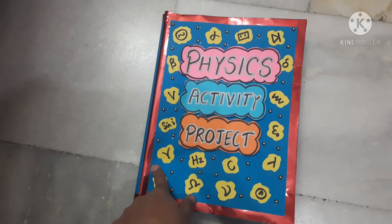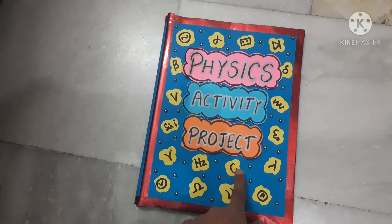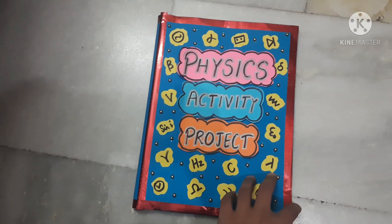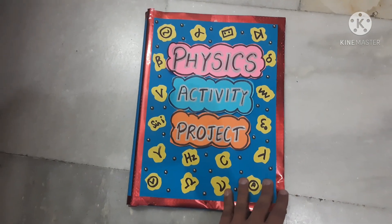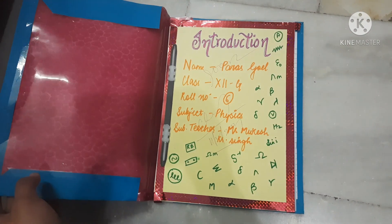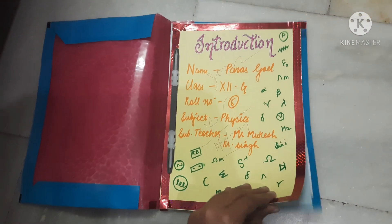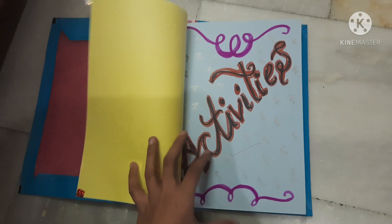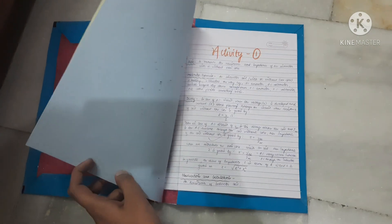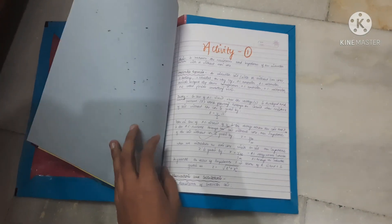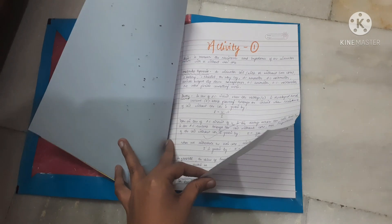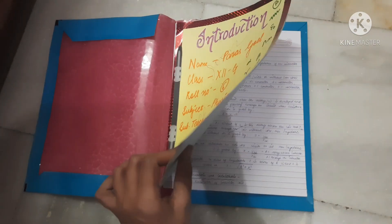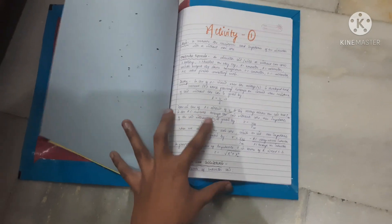As I wanted it to be a bit informative, I have illustrated the symbols and units. This is the introduction. It was a simple file, so I have not written an acknowledgement, certificate, or index, as it only consisted of eight activities — I thought I will make only two pages. And now this is Activity One.